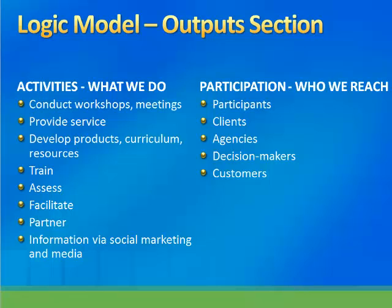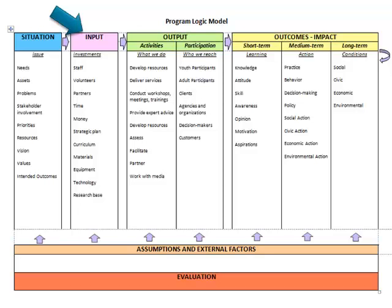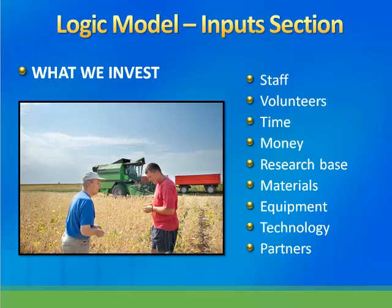Next, list who your participants are and who you plan on reaching. This might include clients, agencies, decision makers, and customers. The next section of the logic model to complete is listing the program investments that will be made, or the program inputs. For the inputs component, list program investments like staff and volunteers, any time spent on the effort, money that's required, the research-based information you plan to provide, any materials or equipment, any technology that you might need, and any partners that will help.